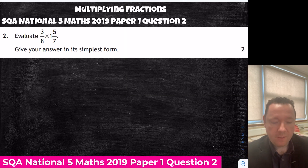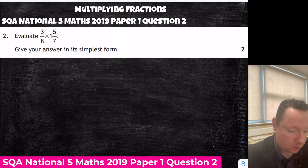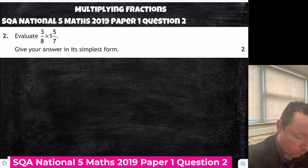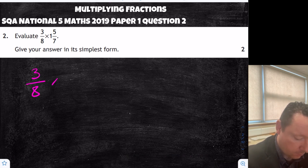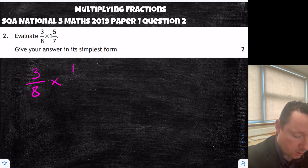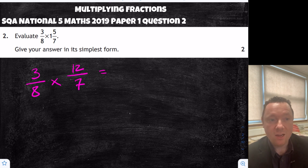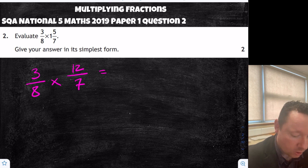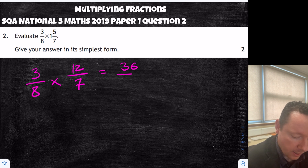National 5 Maths 2019, Paper 1, Question 2 — multiplying fractions. 3 eighths times 1 and 5 sevenths. So we've got 3 eighths times 1 and 5 sevenths. 1 times 7 is 7, plus 5 is 12, so that's 12 over 7. I'm going to simplify when I'm finished. So 3 times 12 is 36, and 8 times 7 is 56.